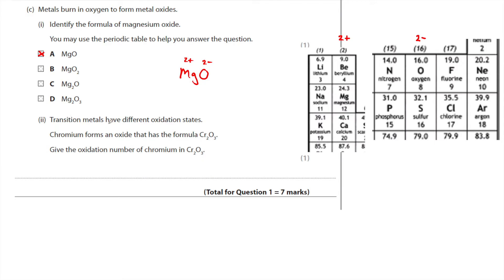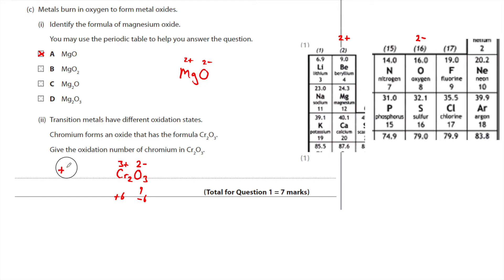Transition metals have different oxidation states. Chromium forms an oxide with formula Cr₂O₃. Give the oxidation number of chromium in Cr₂O₃. Oxygen always has an oxidation state of 2−. The overall oxidation state of the compound is zero. With three oxygens, the total oxidation state of oxygen is −6. To cancel out −6, we need +6 shared across two chromium atoms, so the oxidation state of chromium must be +3 — because 3 × 2 = 6. The answer is +3.